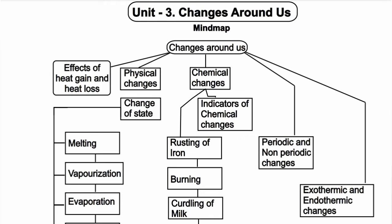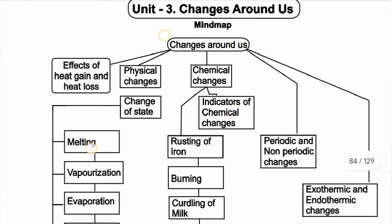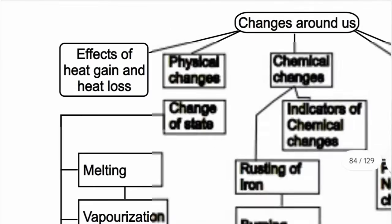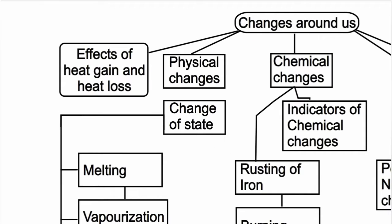In this lesson, we will see a mind map of changes around us. We will see what changes are the effects of heat gain and heat loss on objects. If you gain heat or lose heat, changes include melting, boiling, freezing, and condensation. These result in expansion, contraction, heat gain, and heat loss.